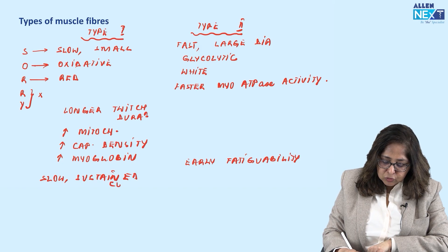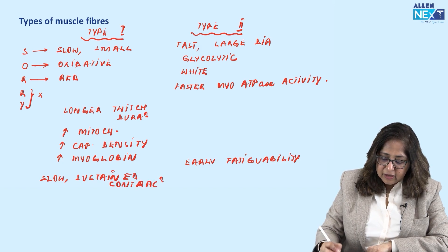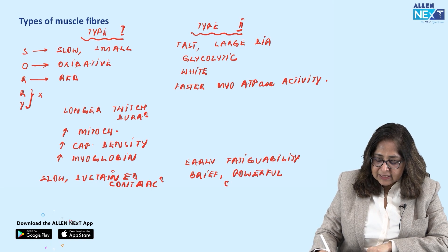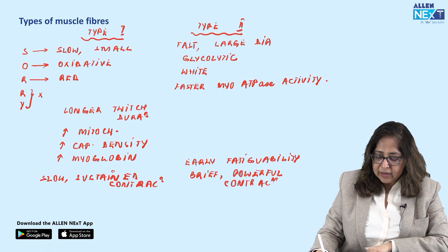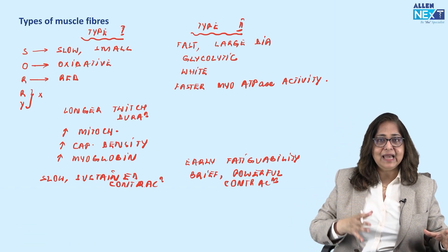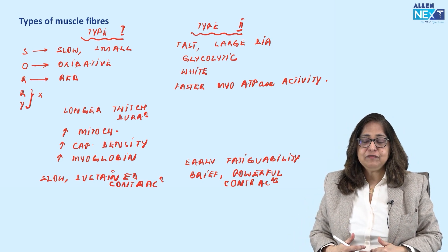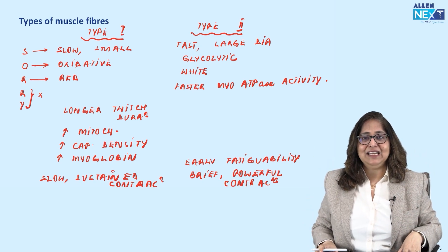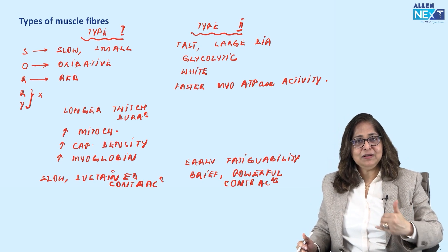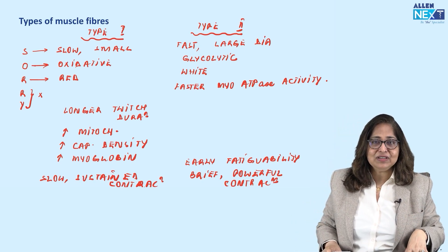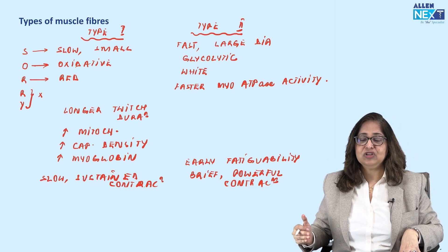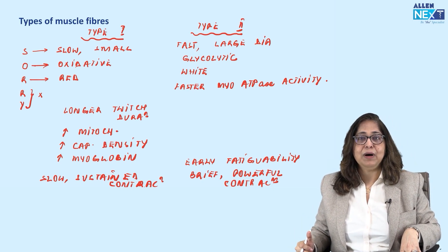Type 2 muscle fibers are used for brief and powerful contractions. In a muscle we have both type 1 and type 2 fibers, but depending upon the activity, one may predominate. For example, all posture-maintaining muscles are contracting throughout the day, so type 1 fibers predominate in anti-gravity or posture-maintaining muscles. Type 1 is for slow sustained contractions; type 2 for brief and powerful contractions.